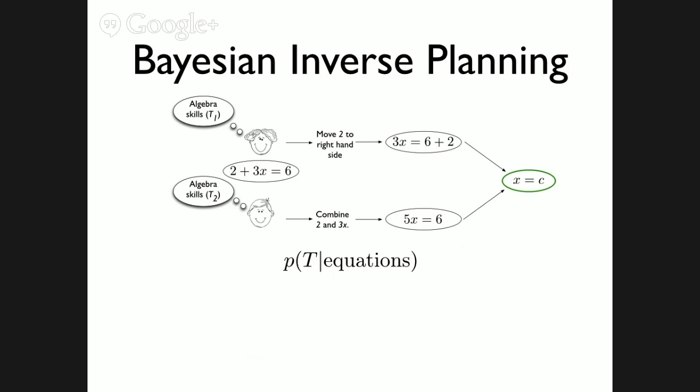The model, which we call Bayesian inverse planning, is modular — the same information processing framework can be applied across different educational domains. We formalize diagnosis as a probability distribution over possible understandings, denoted as t, given the observed behavior — in this case the sequence of equations the student writes down. Having a probability distribution is helpful because it tells us not only the most likely understanding given the observed behavior, but also how much evidence we have to support that, and whether multiple understandings have similar probability.